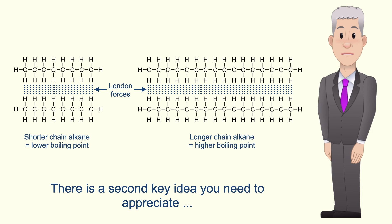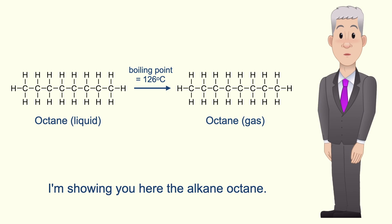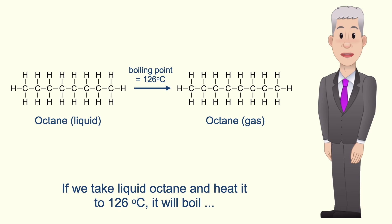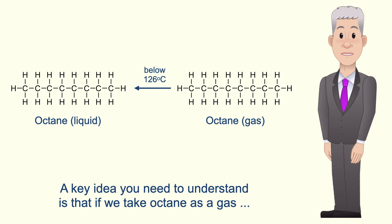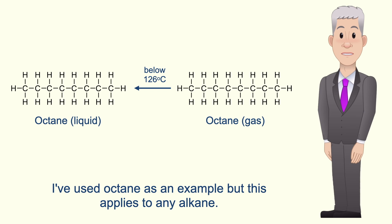There is a second key idea you need to appreciate in order to understand fractional distillation. Here is the alkane octane, which boils at 126 degrees Celsius. If we take liquid octane and heat it to 126 degrees Celsius it will boil, converting from a liquid to a gas. A key idea is that if we take octane as a gas and cool it to below its boiling point, the gas will condense back to the liquid form. This applies to any alkane.